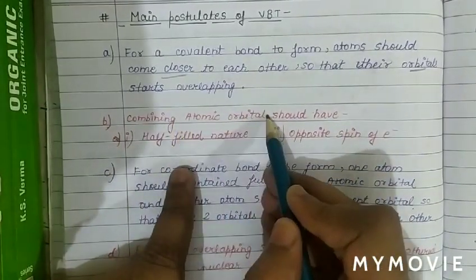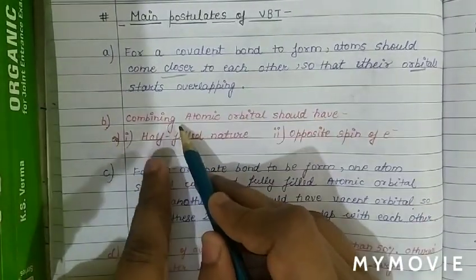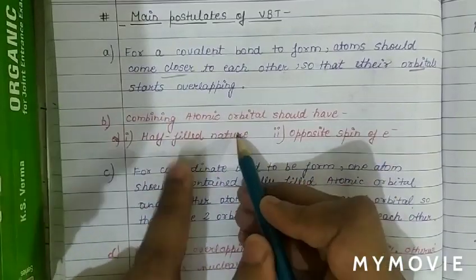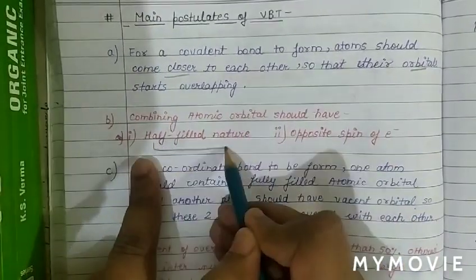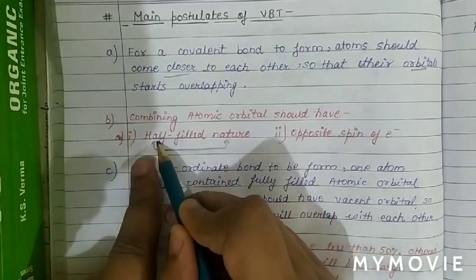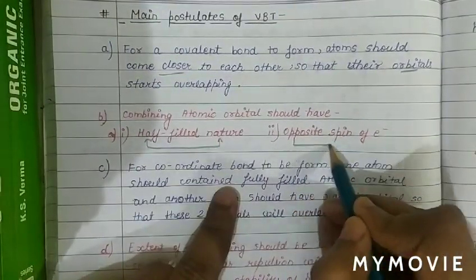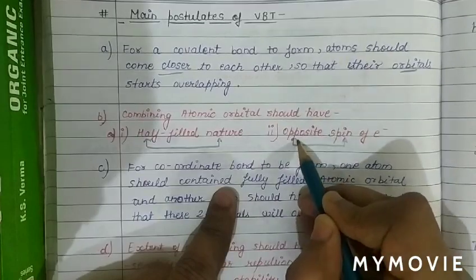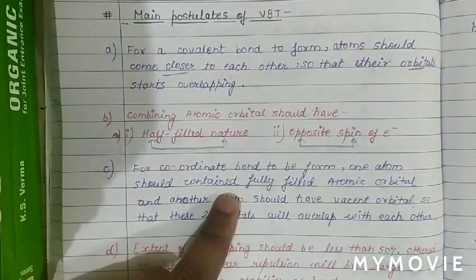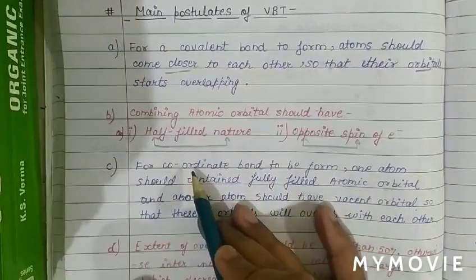The second postulate: the combining atomic orbitals should have half-filled nature, and the electrons in those orbitals must have opposite spins.